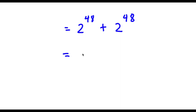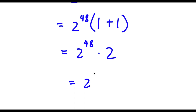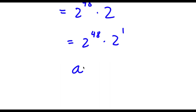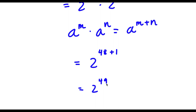So now from here, if I factor out 2 to the power of 48, I get 2 to the power of 48 times 1 plus 1, because 2 to the power of 48 divided by 2 to the power of 48 is 1. Now 1 plus 1, that's equal to 2. So now I have 2 to the power of 48 times 2. Now 2 here is the same thing as 2 to the power of 1. And if I have a to the power of m times a to the power of n, this equals a to the power of m plus n. So 2 to the power of 48 times 2 to the power of 1 equals 2 to the power of 48 plus 1, which is equal to 2 to the power of 49. So this is my answer.